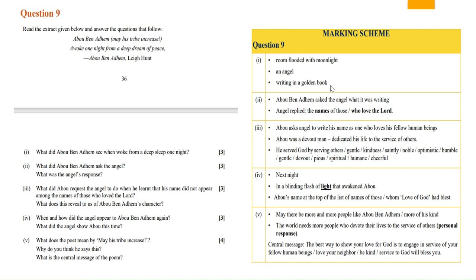When you read the poem, you will see these three points should be mentioned in the answer. If you mentioned three points, you will get the three marks directly. Now you can write that in any language. You can mention the angel before room flooded with moonlight, but these three points should be mentioned in the answer.